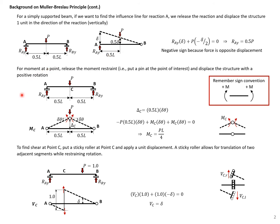We can do the same thing with moment — release the moment restraint by adding a hinge, and then apply that moment back to cause the displaced structure. For shear, we add what's called a sticky roller, which allows for vertical displacement while still restraining rotation. So we have the same angle on the right side of the beam as on the left side, but we can still have a vertical displacement.